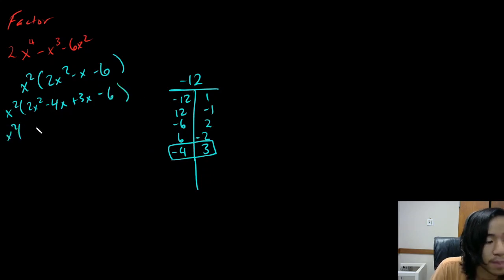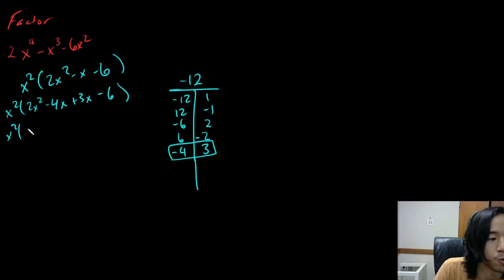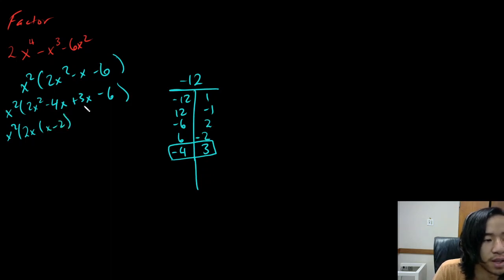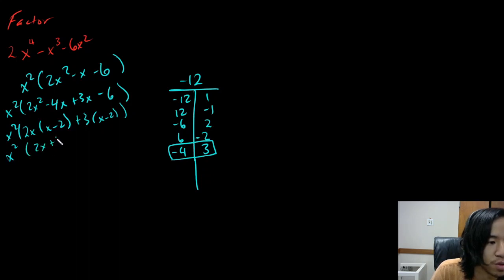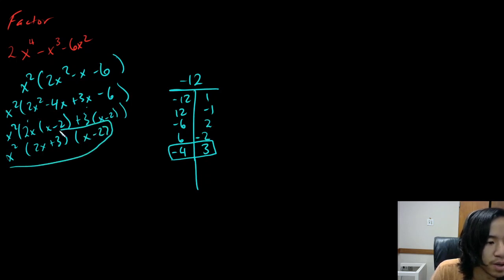Now I'm going to do my grouping step. I'm going to GCF the first two: two X parentheses X minus two, and then GCF the second pair: plus three, then X minus two. So now my two terms are two X plus three times X minus two. So there is my solution.